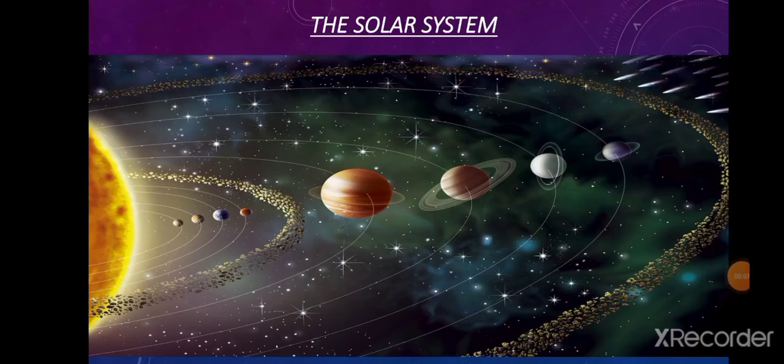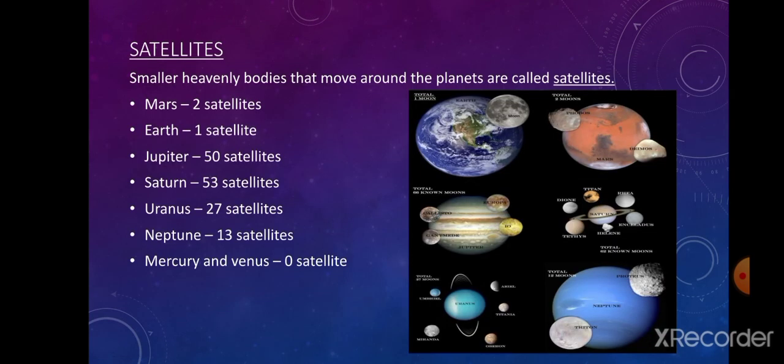Hello students, we have come to the end of the academic year's course. You have three lessons, and to begin with, we will start with Chapter 11, that is the Solar System. About the solar system, we're going to see, but before that we'll see the first thing about the satellite.